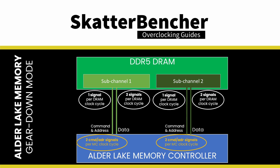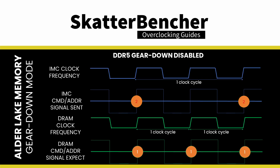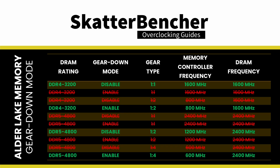However, the memory controller now sends two command address signals per memory controller clock cycle. So, from the DRAM perspective, for each DRAM clock cycle, there will still be one command address signal. As you can see from the table, the default operation for DDR5 is to have the memory controller run at half the memory frequency with Gear Down mode disabled. Because the Alder Lake memory controller sends two command address signals per memory controller clock cycle, from the memory's point of view, there is still one command address signal received per memory clock cycle.